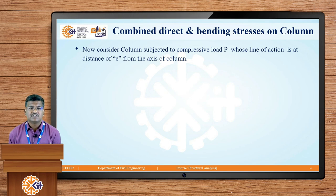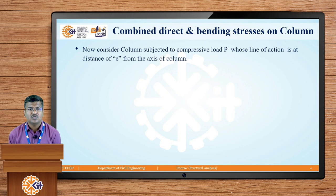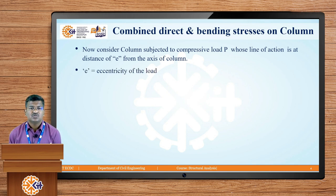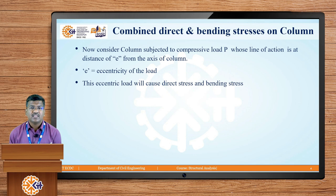We will now discuss the case when the load is acting eccentrically on the column. Consider a column subjected to the compressive load P whose line of action is at a distance of small e from the axis of the column — this is nothing but an eccentric load. Small e is the eccentricity of the load, that is the distance from the axis of the column. The eccentric load will cause both direct stress and bending stress simultaneously on the column section.